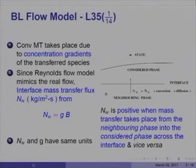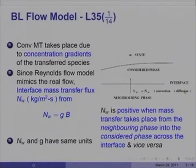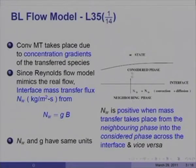The definition of the boundary layer flow model is as follows. Here is a surface; this is the considered phase and this is the neighboring phase. This is the inter-phase, and in the considered phase there may be presence of chemical reactions, turbulence, concentration gradients, temperature gradients and so on. The infinity state is one where all the gradients vanish. Total mass transfer — both convective plus diffusive — takes place at the interface, and in the deep inside the neighboring phase we define a T state where concentration and temperature gradients are zero, meaning fluid properties are uniform.